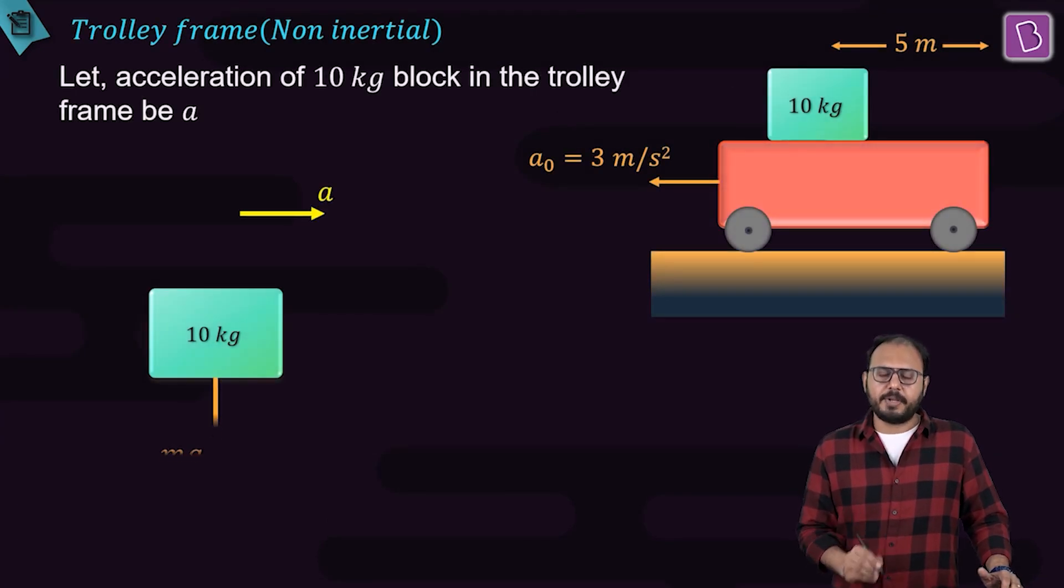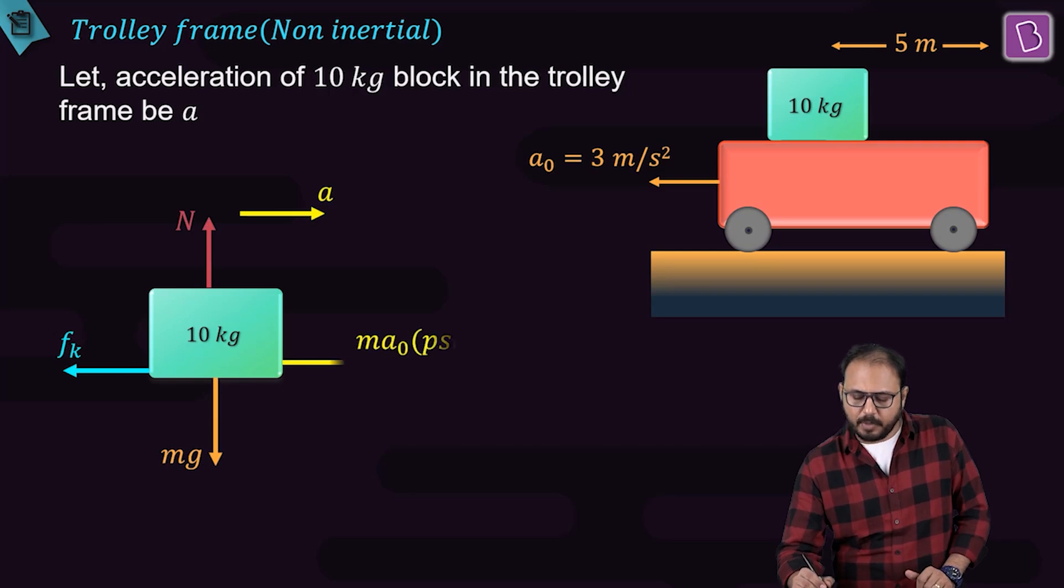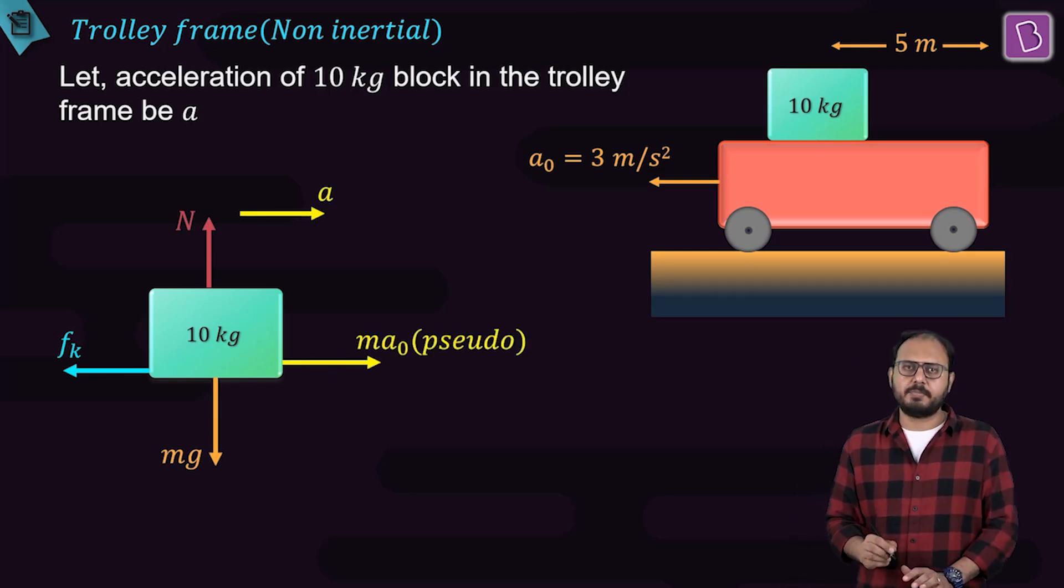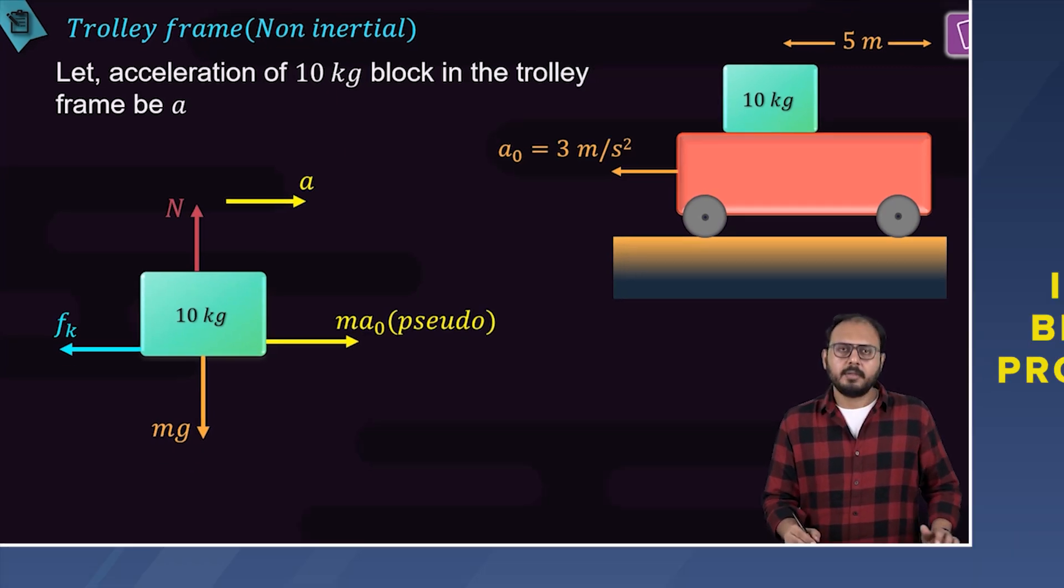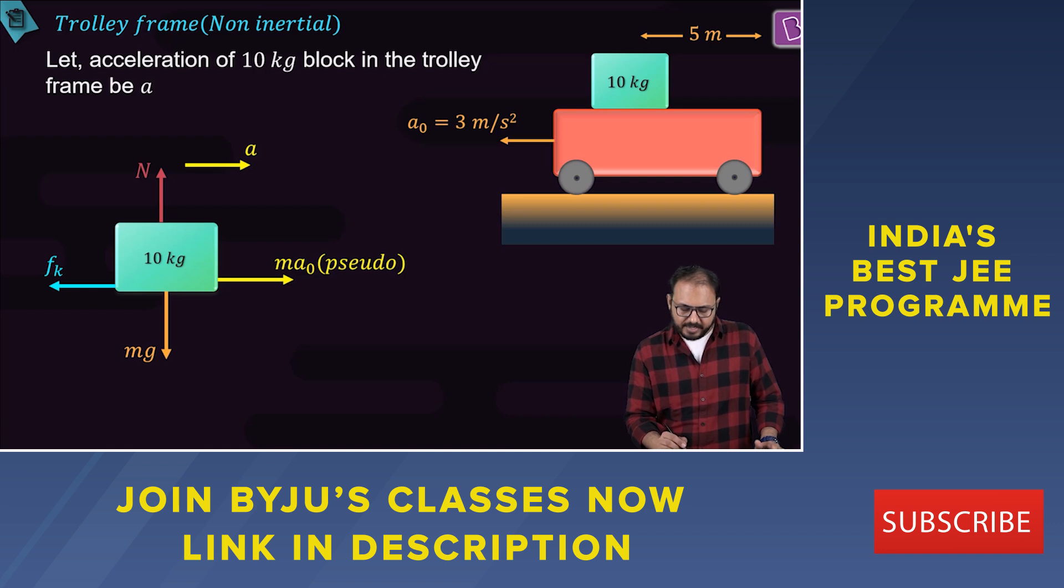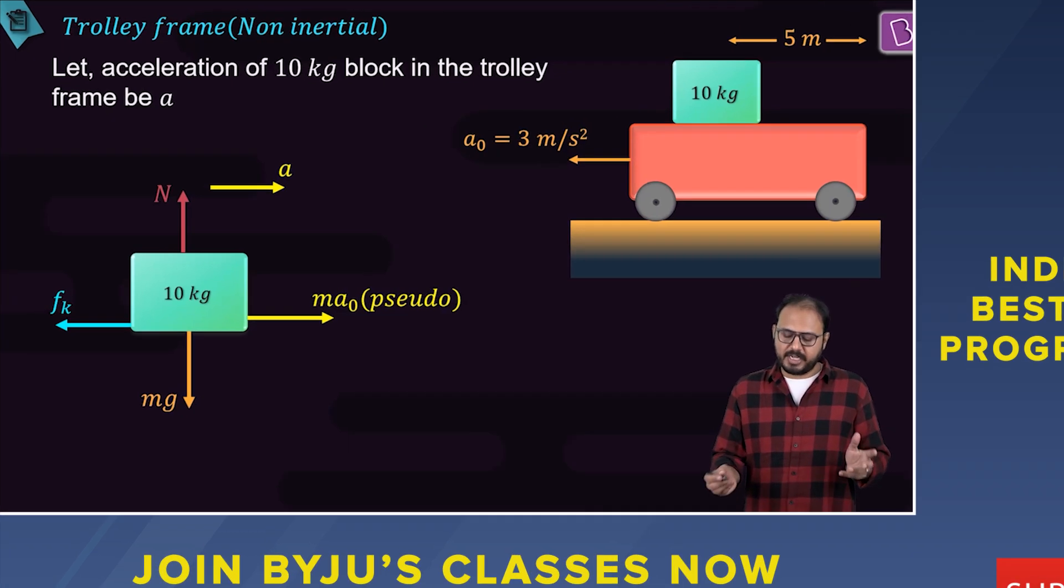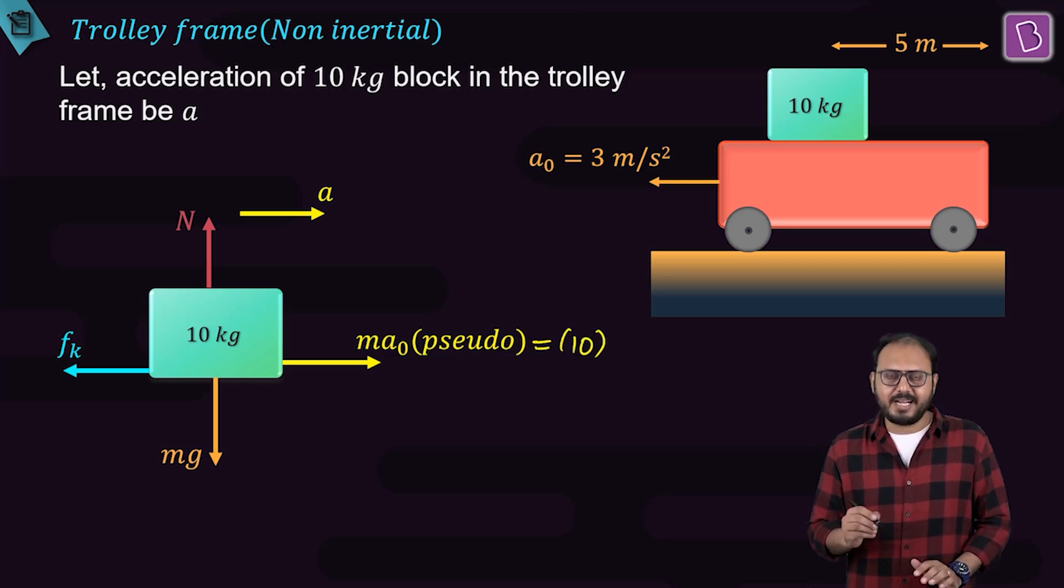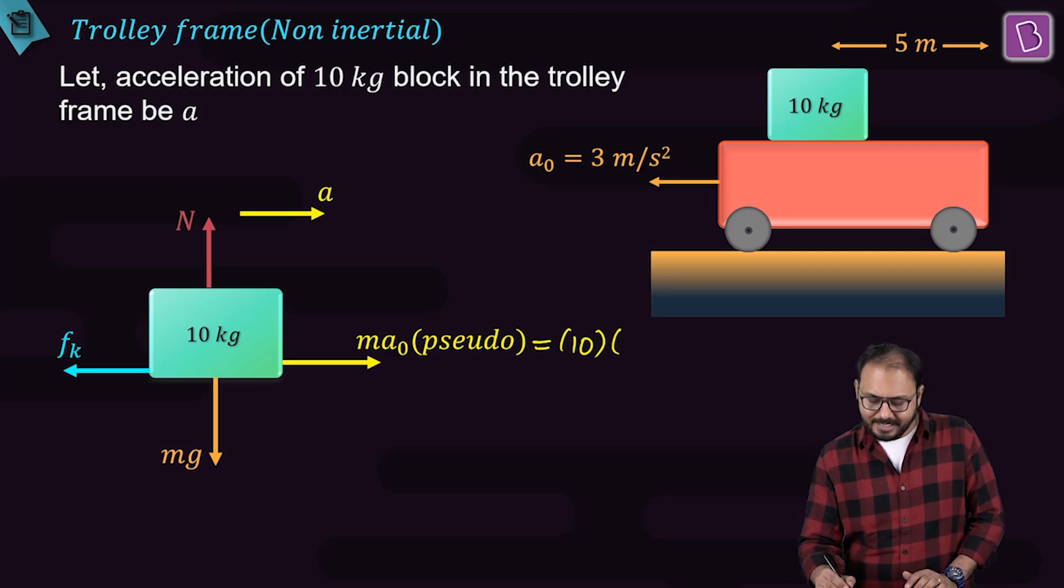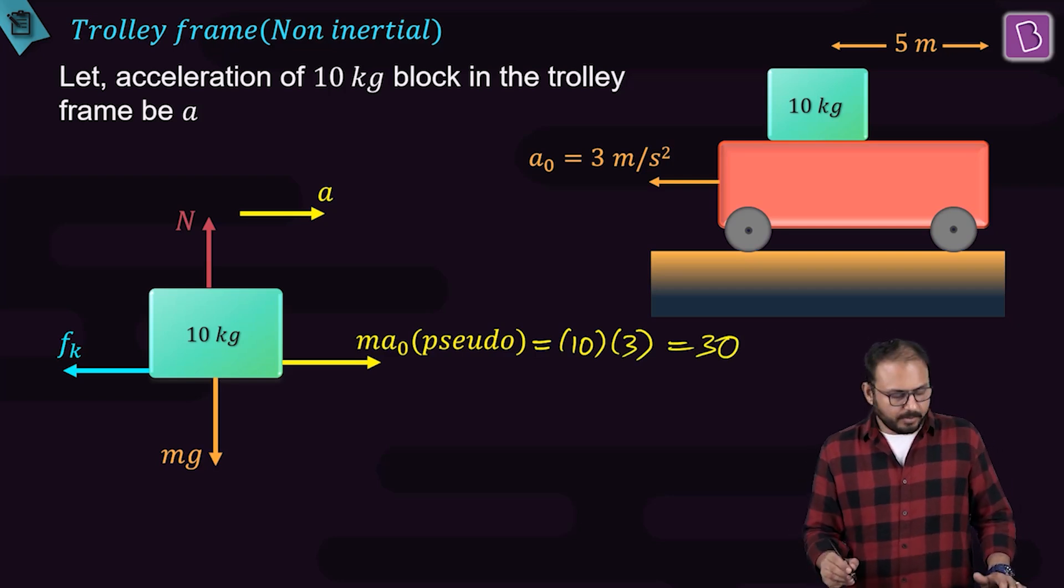Let's go in the trolley frame. The observer stands on the trolley and looks at the 10 kg block. Always start with your strength. First, the weight mg. The normal reaction. Pseudoforce, because the trolley has an acceleration. So there is a pseudoforce to the right-hand side. And the friction. What is pseudoforce equal to? Pseudoforce is equal to 10 times 3, which is equal to 30.